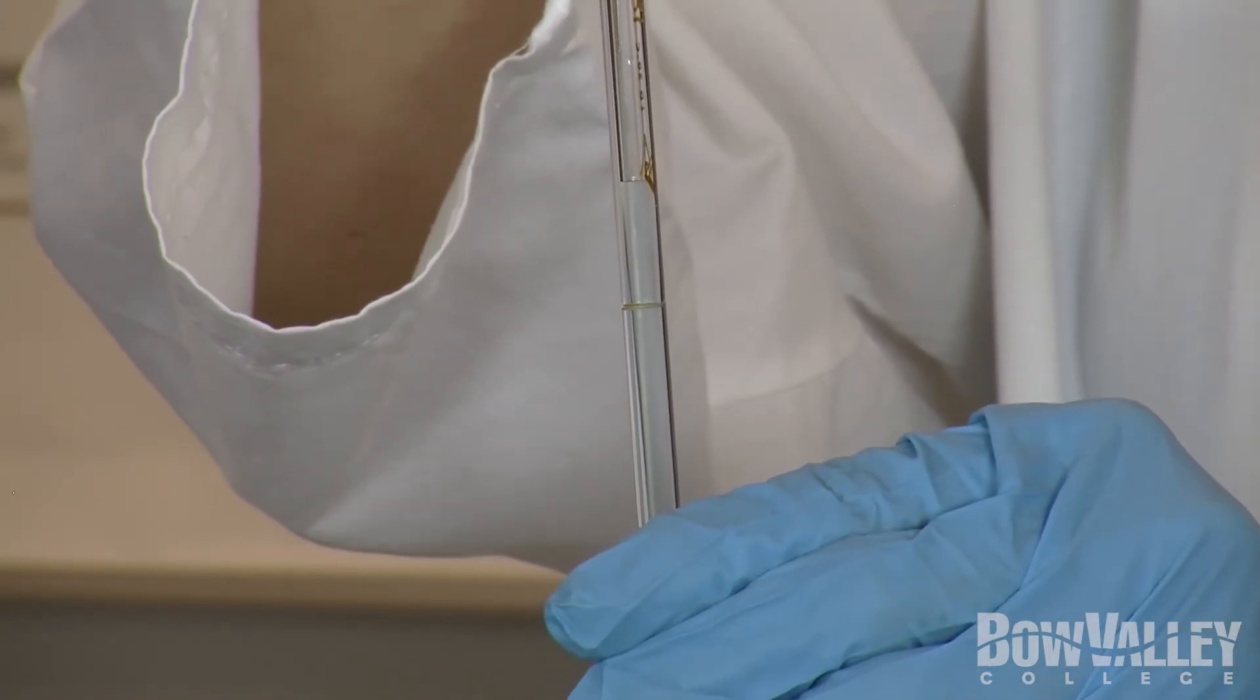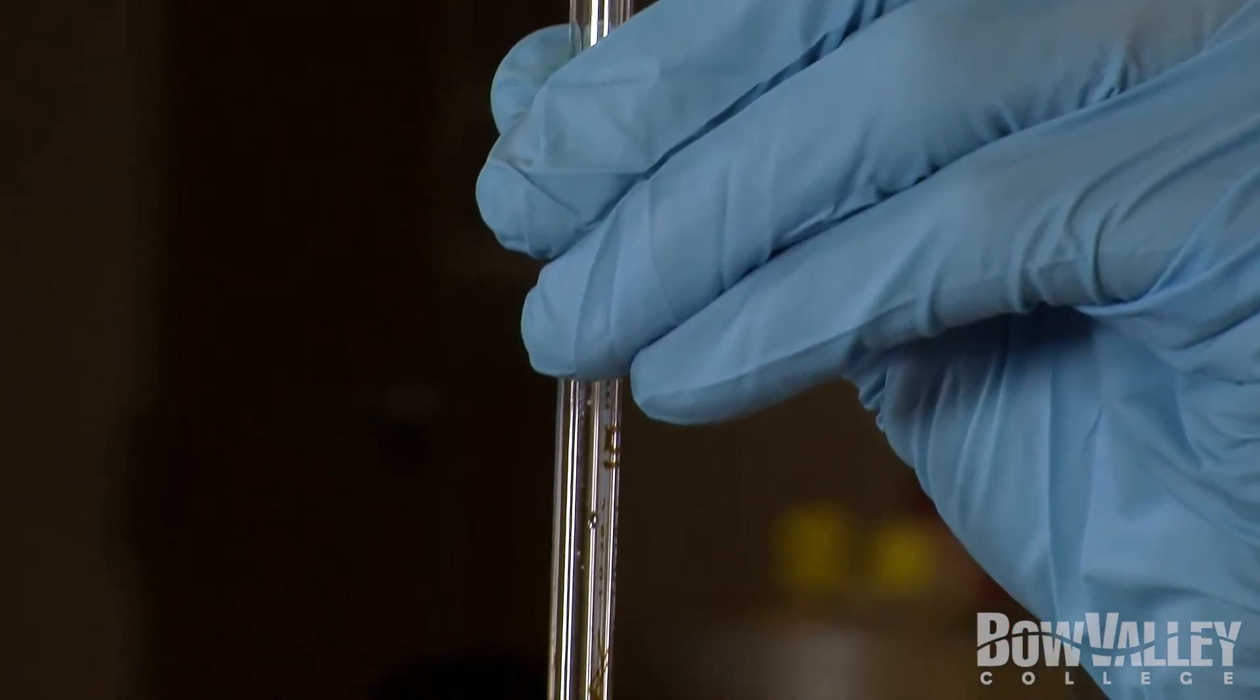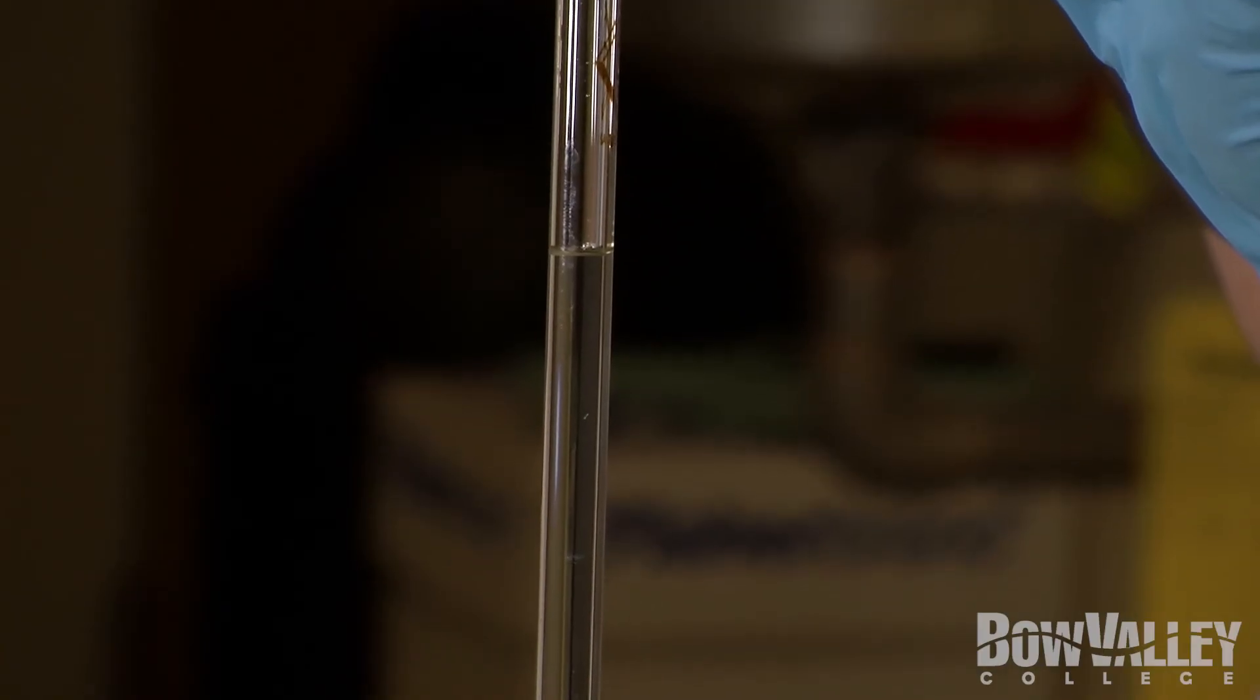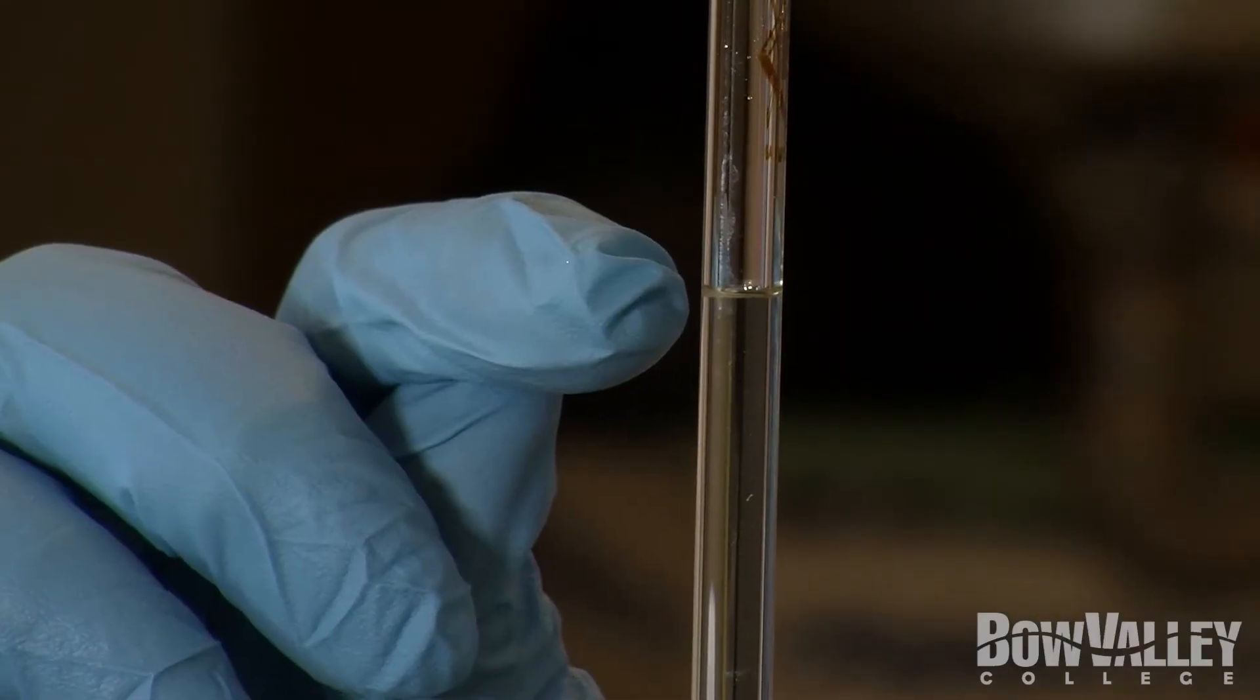Remove the bulb and quickly cover the end with your index finger, creating a seal. Slowly lift your finger and allow the liquid to exit until the bottom of the meniscus is sitting on top of the line marked on the pipette. If you allow too much to exit, simply use the pipette bulb to draw more liquid in and try again. This takes some practice, so be patient with yourself.